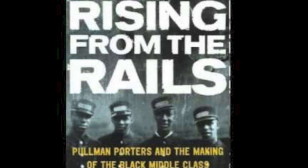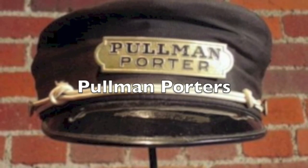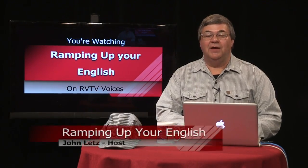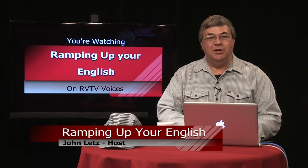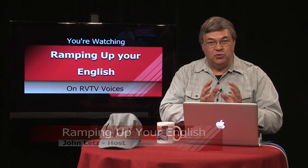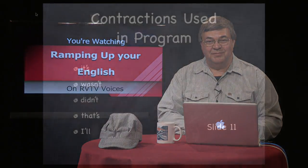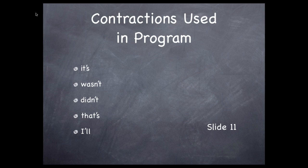Read all about it in Rising from the Rails, published by Holt & Company Press. Welcome back to Ramping Up Your English. I'm your host, John Letts. In the video you just watched, we used a number of contractions. A contraction is a way of combining two words and leaving out one or more letters from one of the words. Let's look at some of the contractions used in the video clip: it's, wasn't, didn't, that's, and I'll were all used in the narration. And not all languages allow contractions, so these might be confusing to some intermediate English learners.